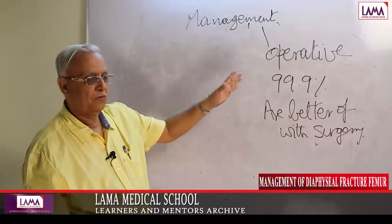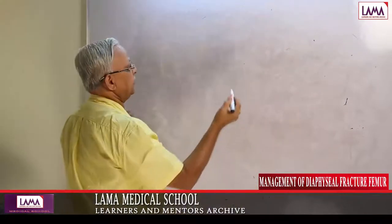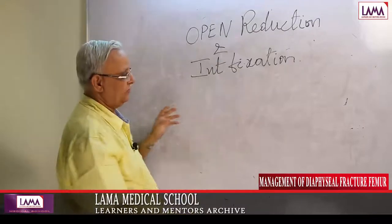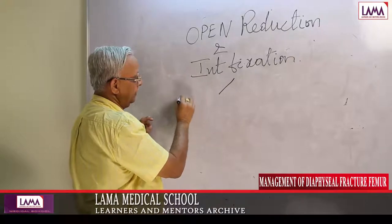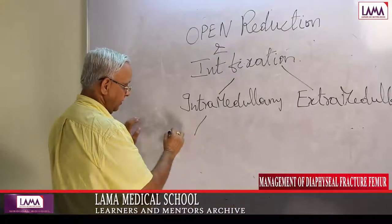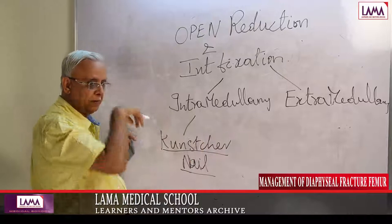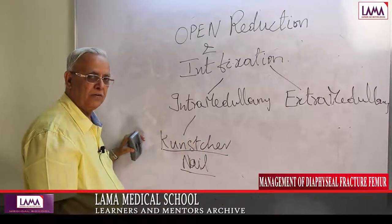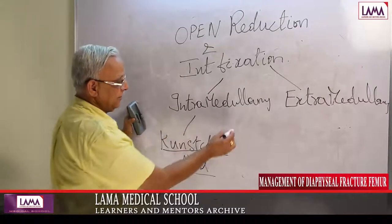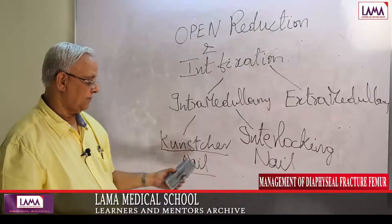Most often, operative treatment is required for fractures of the shaft of femur. Operative options include open reduction internal fixation (ORIF). Within this, there is intramedullary fixation and extramedullary fixation. In intramedullary fixation, we have the Kuntscher nail — very common until about 20 to 25 years ago before image intensifiers were widely available — and the interlocking nail, which is now the standard procedure.